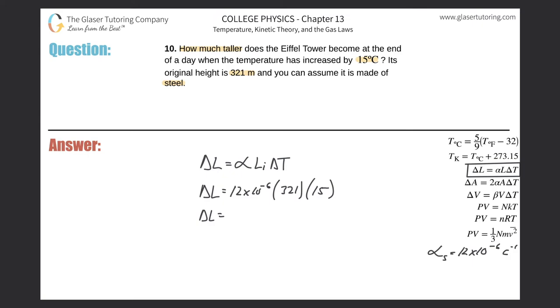Alright, change, and then voila. So 12 times 10 to the minus 6 times 321 times 15. So here we get a change value now of 0.058, and that's in terms of meters. If you had to think about that in terms of centimeters, that would simply be 5.8, roughly 6 centimeters.